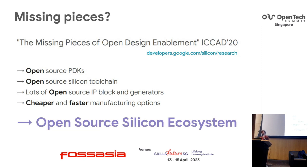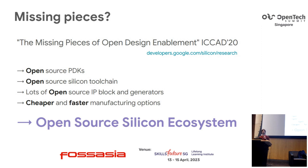The first missing piece is open source PDKs. In the software world, we take for granted that we have open source SDKs and libraries to build on — our work is often just remixing libraries to produce something original. It doesn't really work like this in hardware. The very lower level of the stack, the PDK, is like an SDK for hardware. It defines the specification of the foundry process and allows you to manufacture something with that foundry. Currently, most PDKs require an NDA, so you can't even start developing a project until you sign a contract with the foundry.